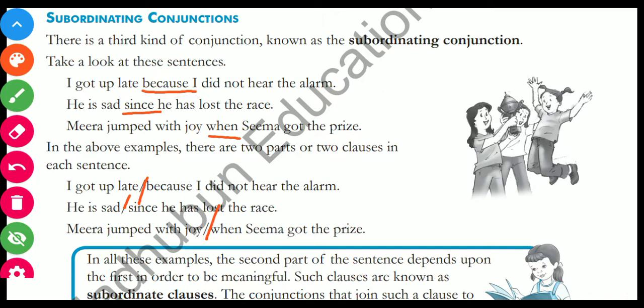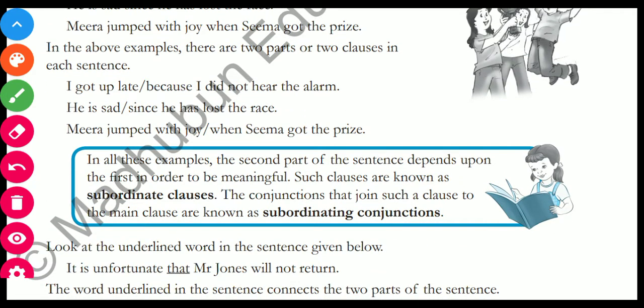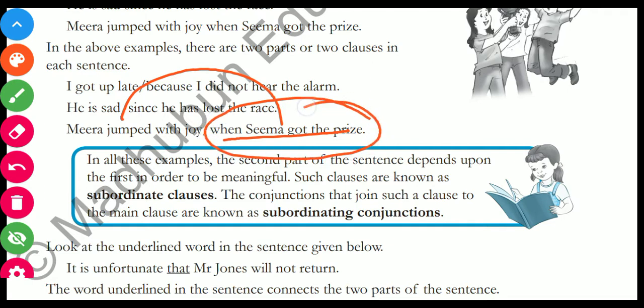In all these examples, the second part of the sentence depends upon the first in order to be meaningful. Such clauses are known as subordinate clauses. The conjunctions that join such a clause to the main clause are known as subordinating conjunctions. The second part, which is dependent on the first part, is the subordinate clause.